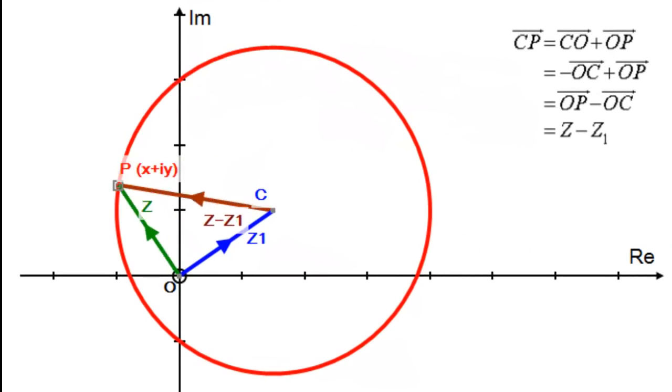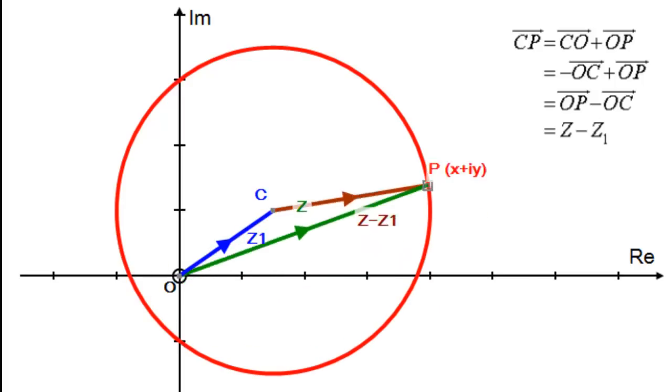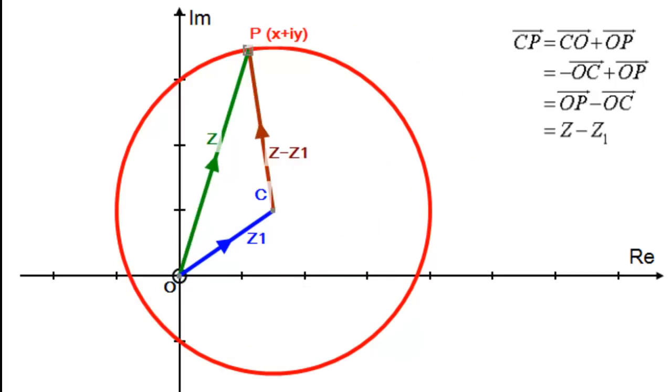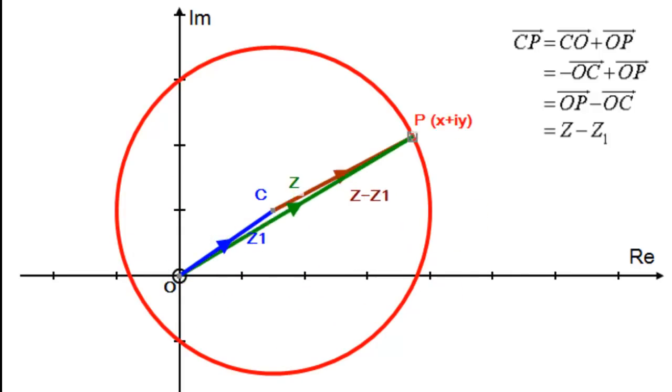Hi. Welcome to a series of videos on the locus of a point on an Argand diagram. In this video I'll be looking at the locus of a point which remains at a constant distance from a fixed point in the complex plane. In other words, a circle.